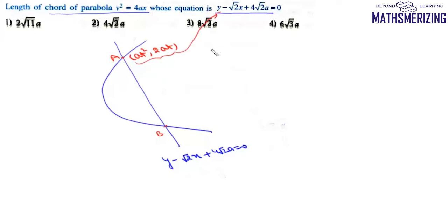Substituting this into the equation, we get 2at - √2at² + 4√2a = 0. We can cancel a and also cancel √2.